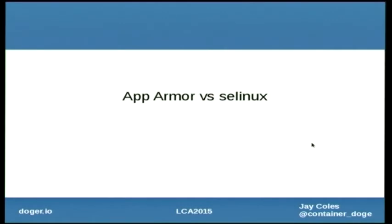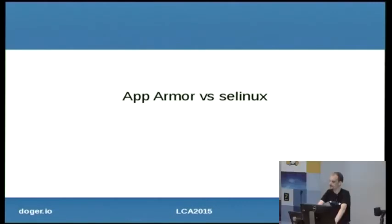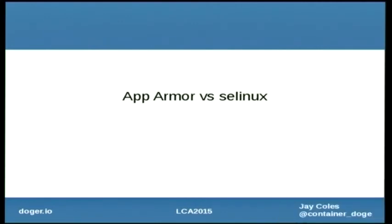The next two subsystems are the Linux security modules: AppArmor and SELinux. I don't really have much to say about one versus the other — they're both great. You should be using one or the other if you've got containers on your system. Which one you use is probably more dictated by your distribution choice. However, AppArmor is more focused on protecting the host system from containers rather than protecting containers from each other.